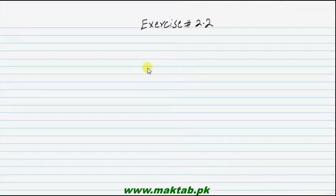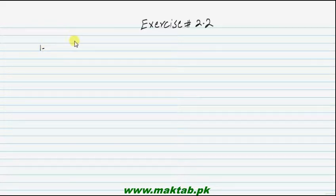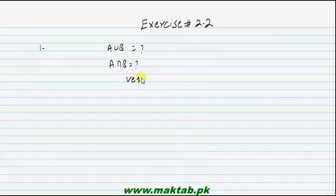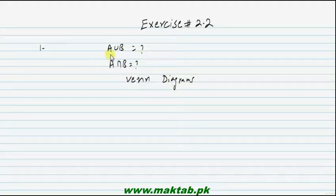In the name of Allah, we will start with this lecture. Let's start with question number 1: exhibit A union B, A union B, and A intersection B by Venn diagrams. We need to use Venn diagrams and will show A union B and A intersection B.